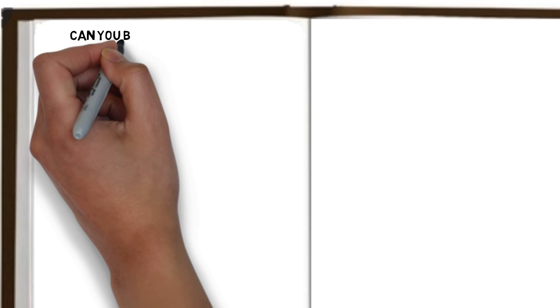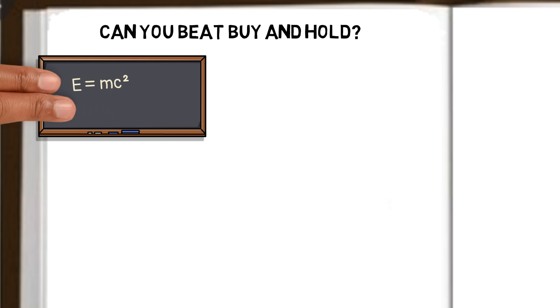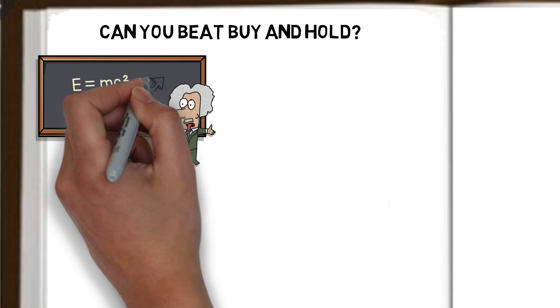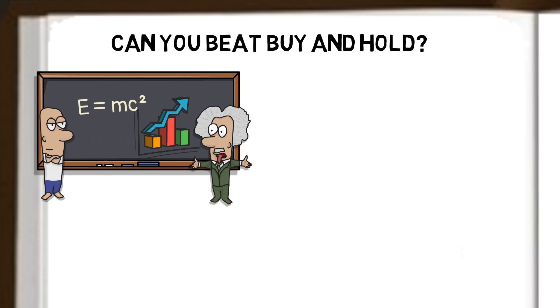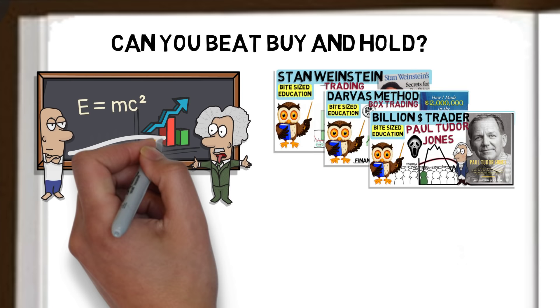The question is posed, can you beat buy and hold? The efficient market hypothesis would have you believe that all known data is reflected in current asset prices, and it is therefore impossible to beat the market. Conversely, traders like myself and other gurus covered on this channel know the market can be beaten, and the moving average indicator is just one of the tools we can use to do it.